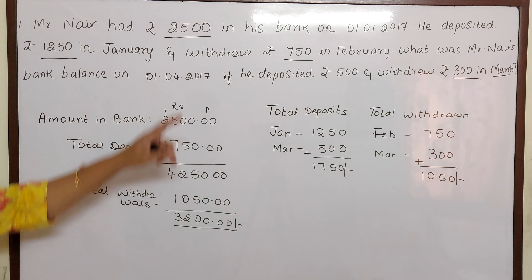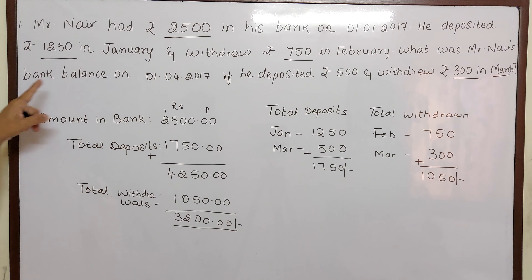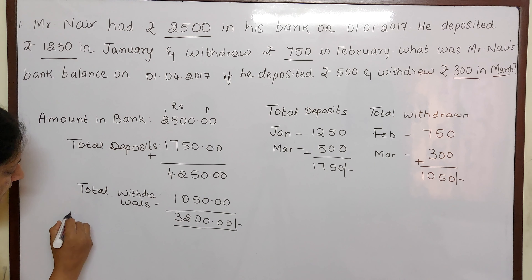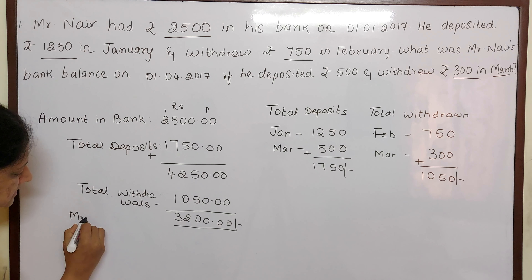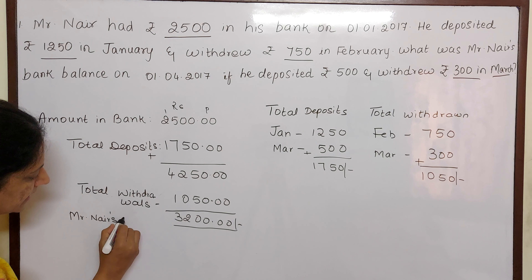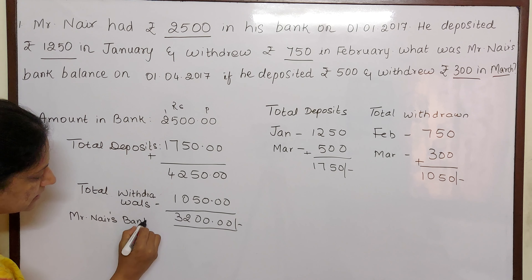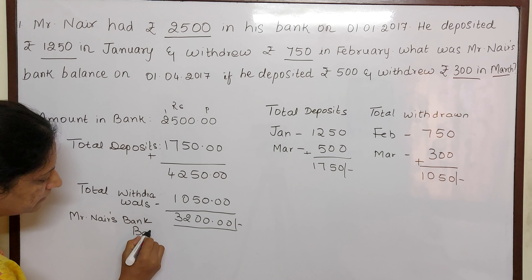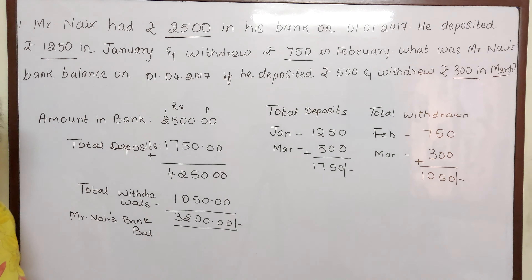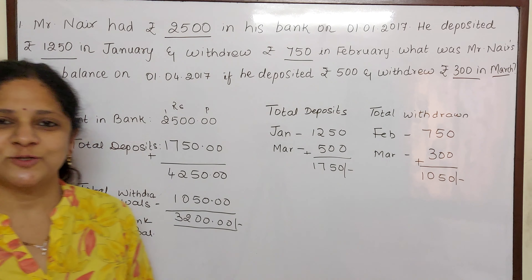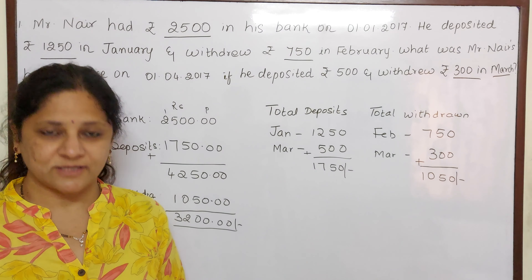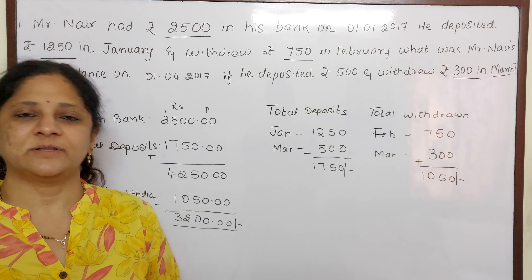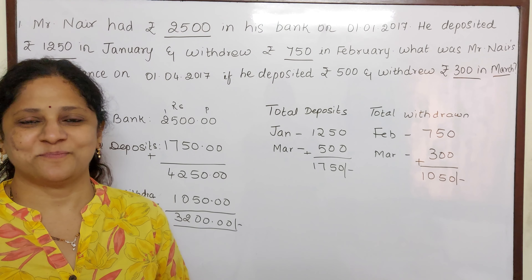So Mr. Nair's bank balance on 1st April 2017 is Rs. 3,200. Hope you understood, children. See you in the next video with many more sums. Bye.